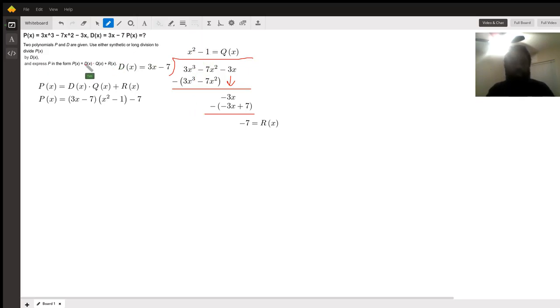So we must put the polynomial in terms of the divisor times the quotient plus the remainder.